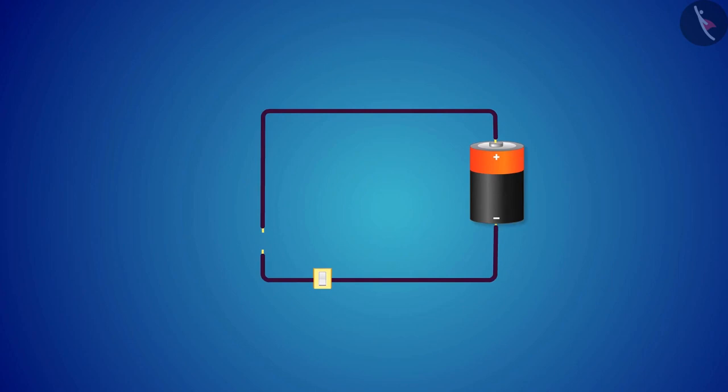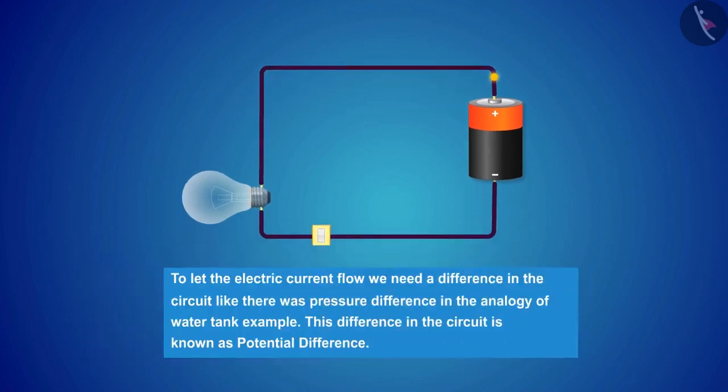Let's attach the other terminal of the battery to the bulb. Electricity is also like this tank example. To let the electric current flow, we need a difference in the circuit like there was a pressure difference in the analogy of the water tank example.